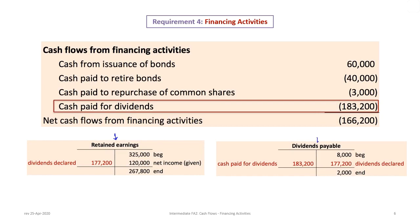We need to reconstruct the retained earnings account and the dividends payable account to determine cash paid for dividends. Retained earnings has a $325,000 beginning balance, a $267,800 ending balance, and net income of $120,000. The T-account requires a debit of $177,200, which represents dividends declared. Dividends declared are not the same as dividends paid. Also, when reconstructing, always check the additional information for any stock dividends declared, since dividends can be stock or cash.